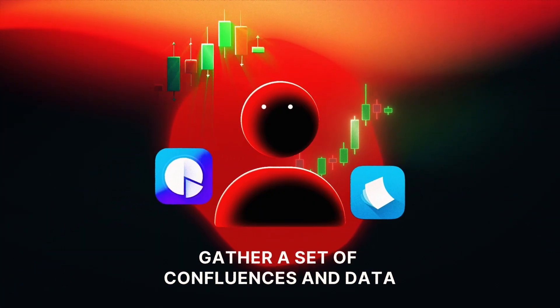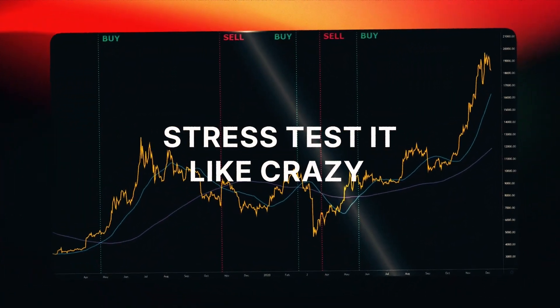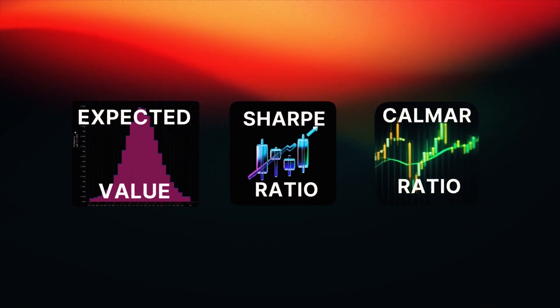So what do quants actually do? The truth about quants is they gather a set of confluences, a set of data, and they stress test it like crazy. They use backtesting software, they see the expected value, the Sharpe ratio, the Calmar ratio. Essentially, quant traders have a strategy, a set of confluences, and they stress test it like crazy. They see what the return would have been, what the average expected return is, whether the expected value is positive or negative, how the Sharpe ratio looks — whether it's above one or above three.